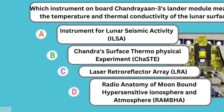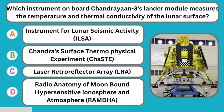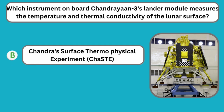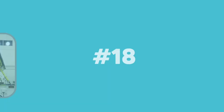Question number seventeen: Which instrument on Chandrayaan 3's lander module measures the temperature and thermal conductivity of the lunar surface? The correct answer is the Chandrayaan Surface Thermophysical Experiment, ChaSTE.